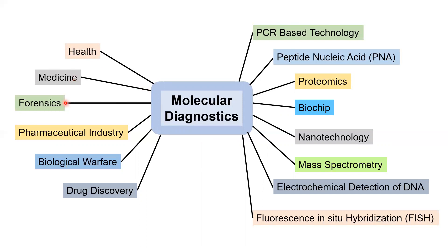Forensics is very important. For example, samples such as saliva, blood, semen, or hair can have DNA extracted from them, and through DNA polymorphism you can identify a person. Molecular diagnostics also applies to the pharmaceutical industry and to the detection of biological warfare — if you are under a biological attack, molecular diagnostics can help identify which kind of organism is involved.